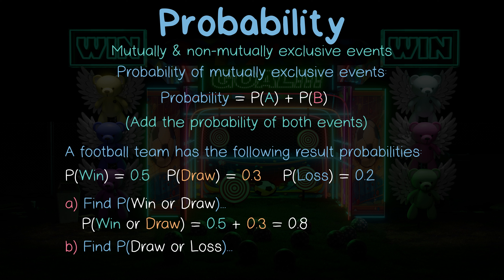For a loss or a draw, it's as simple as that. They're mutually exclusive, so we add the probabilities together. The probability of the loss is 0.2, and the draw is 0.3. That gives us a total of 0.5.